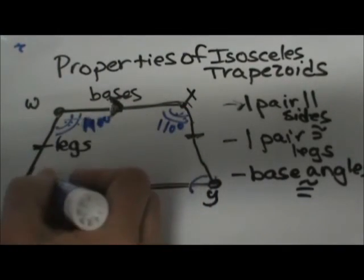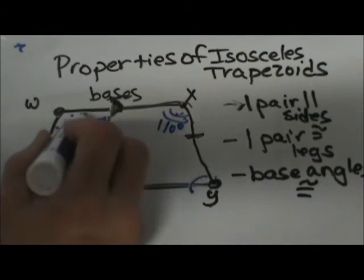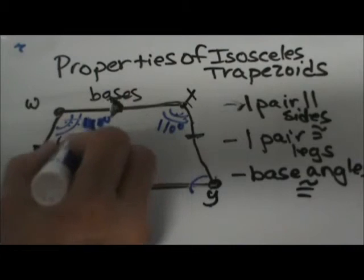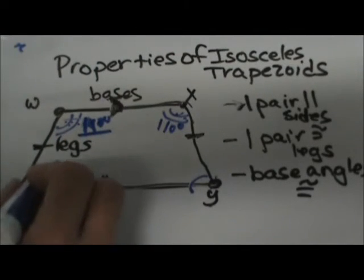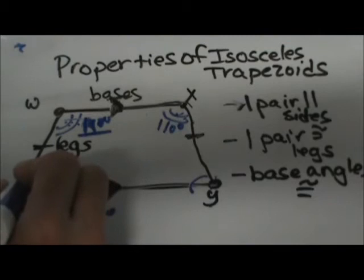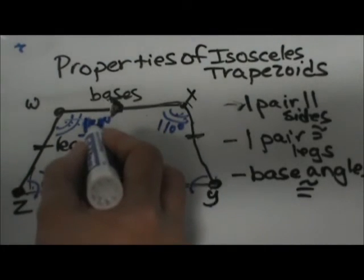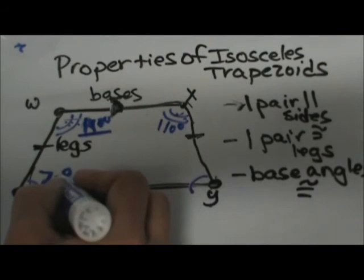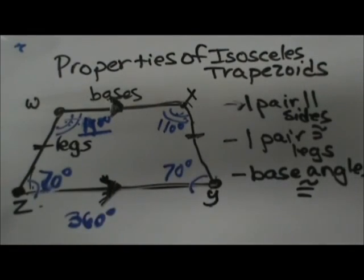Now these adjacent angles are going to be supplementary. So if this one is 110, the angle below it has to add up to 180 degrees. So this one would have to be 70. This one would be 70 because these two are supplementary or add to 180, and this one would also be 70 degrees.